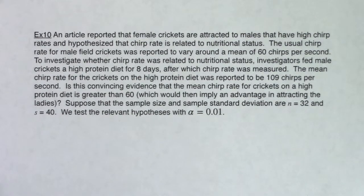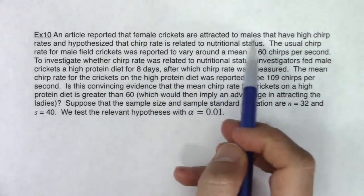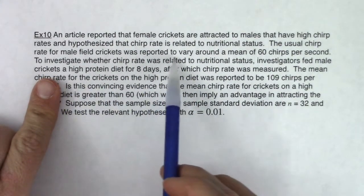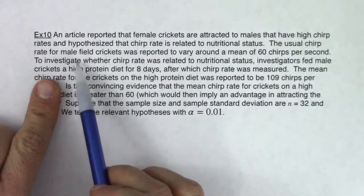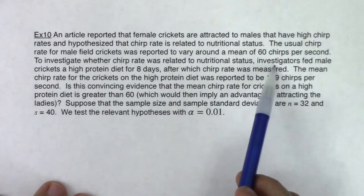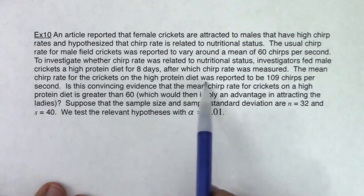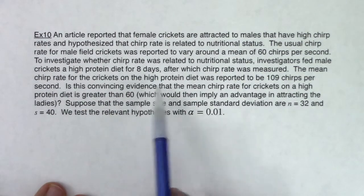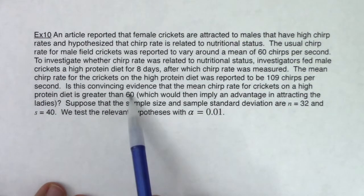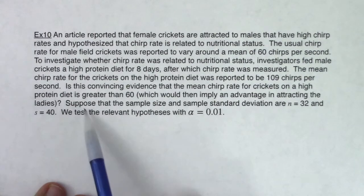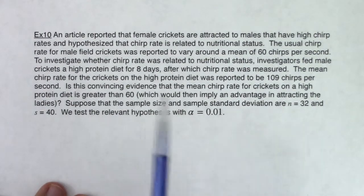Here we go with another hypothesis test. As I read through this, be on the listen for what is the variable in this problem, or how can we infer — are we in mean land or proportion land? An article reported that female crickets are attracted to males that have high chirp rates, and hypothesized that chirp rate is related to nutritional status. The usual chirp rate for male field crickets was reported to vary around a mean of 60 chirps per second. Investigators fed male crickets on a high protein diet for eight days, after which chirp rate was measured. The mean chirp rate for crickets on the high protein diet was reported to be 109 chirps per second. Is this convincing evidence that the mean chirp rate for crickets on a high protein diet is greater than 60, which would imply an advantage in attracting the ladies? The sample size and sample standard deviation are 32 and 40. We test the relevant hypotheses at a one percent alpha.